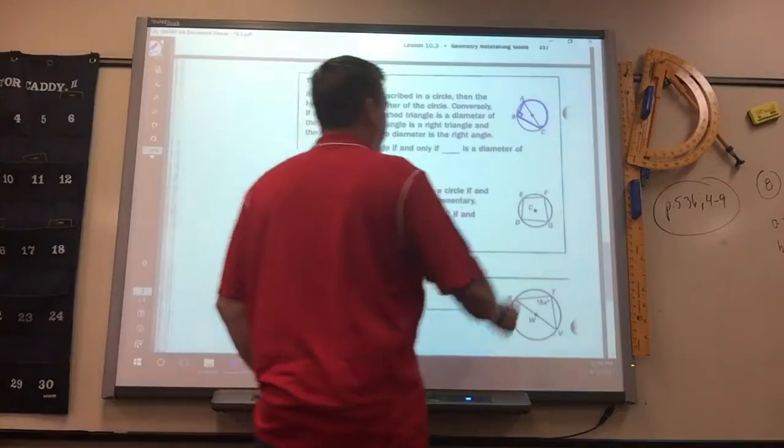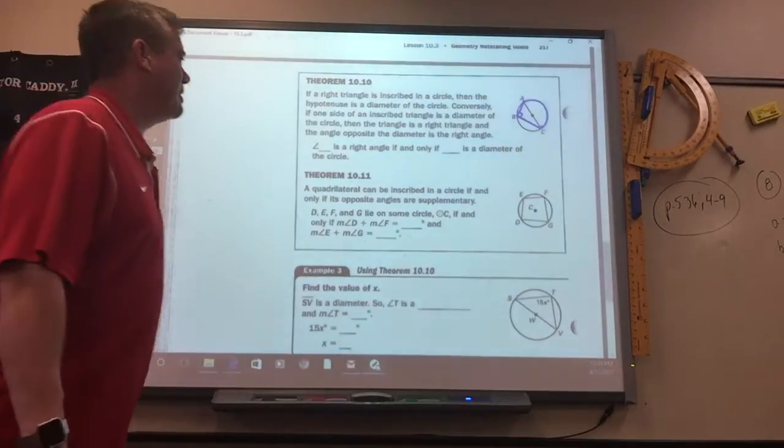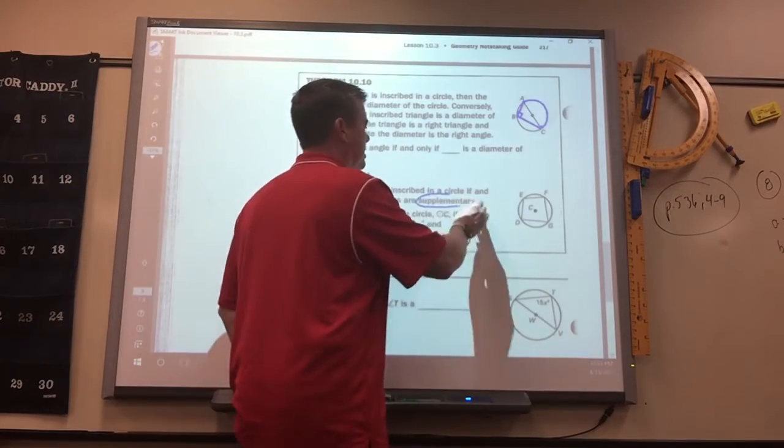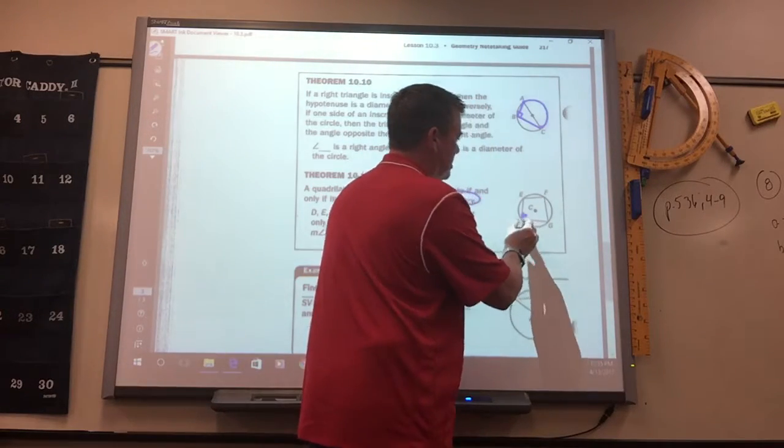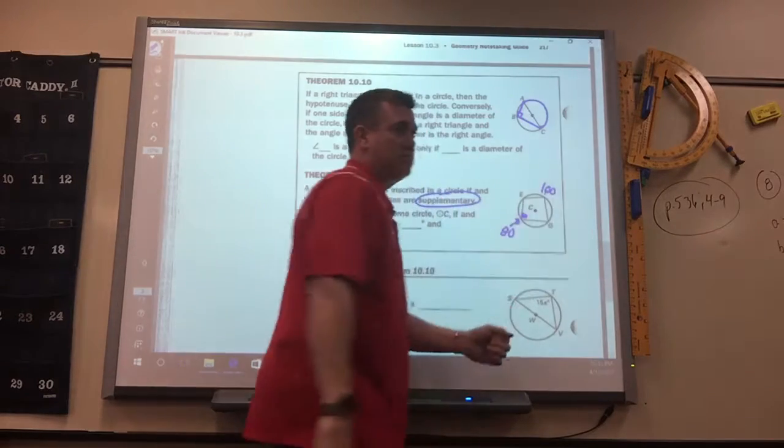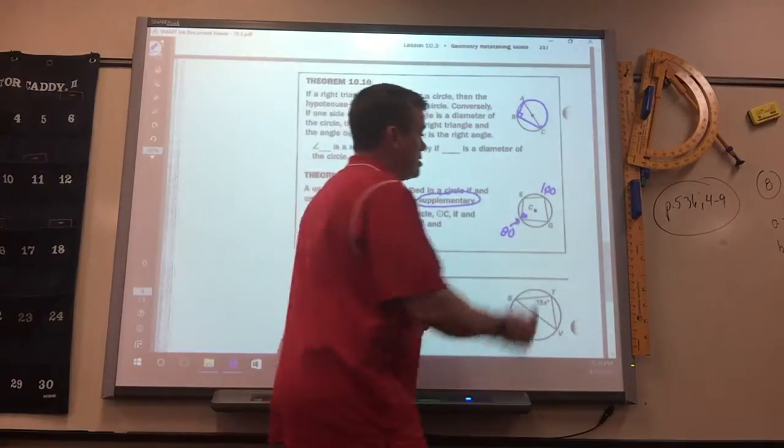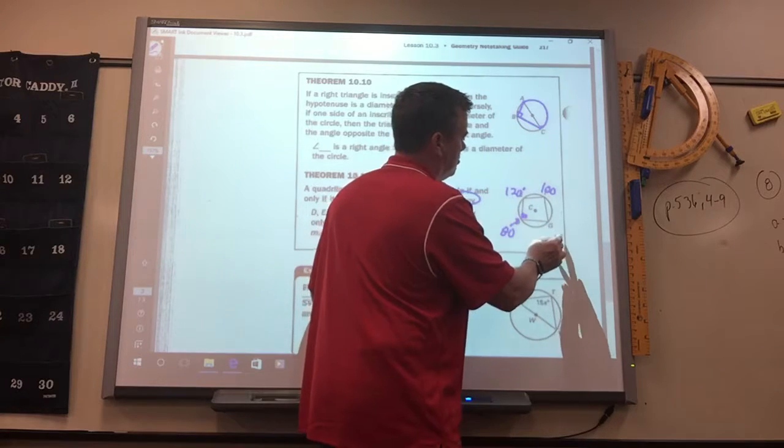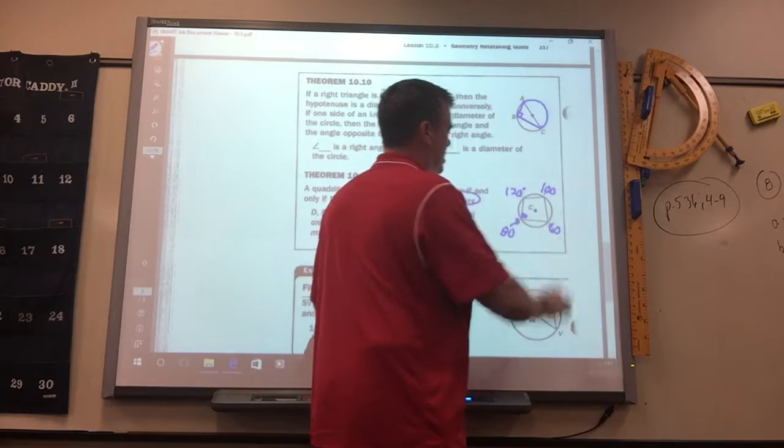If you have a quadrilateral in there, its opposite angles are going to be supplementary. So like, if this was an 80 degree angle right there, this would have to be 100. So if it's a quadrilateral, opposite angles add up to 180. So if this was 120 right there, this would be 60. It's not quite 120, but it would have to be 60, which it obviously isn't.